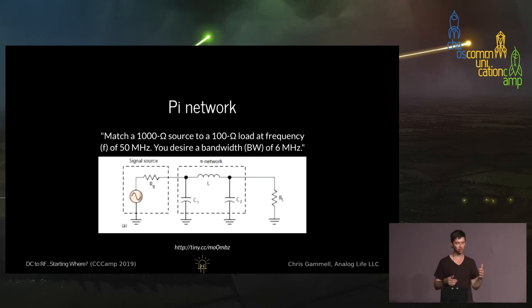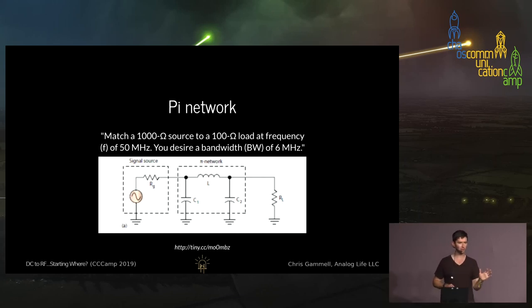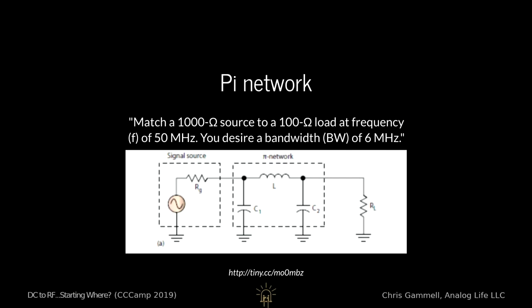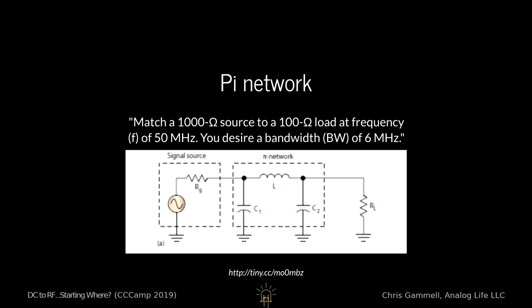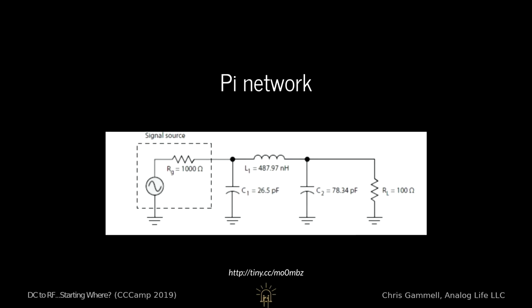As a simple example, a pi network is one way to normalize your output and input — in this case, a 1000-ohm source on the left, with a little network of inductors and capacitors, then your load, in this case an antenna at 100 ohms. You want to normalize these things at 50 MHz with a bandwidth of 6 MHz. There's a bunch of calculations you can do to find values that allow you to match up your signal source — in this case an amplifier — and your antenna, so they work better together with maximum output.